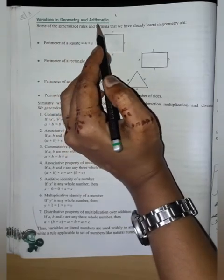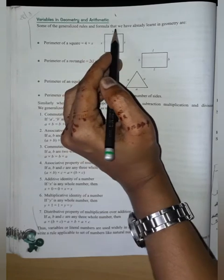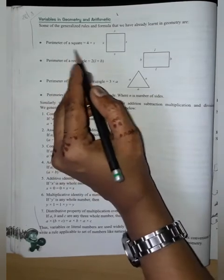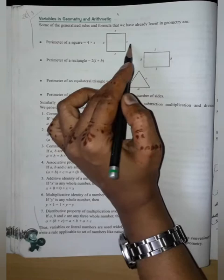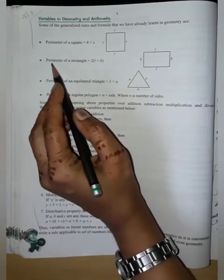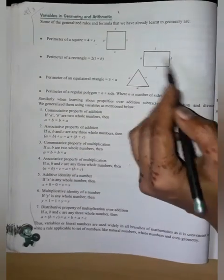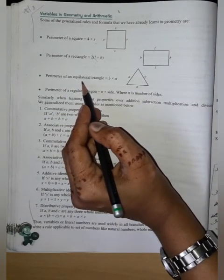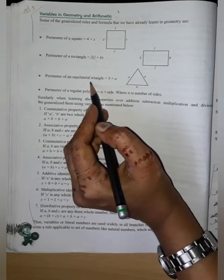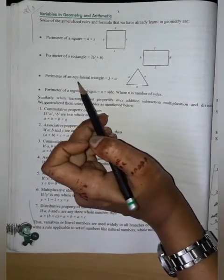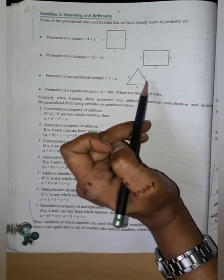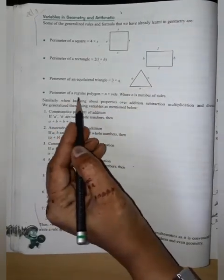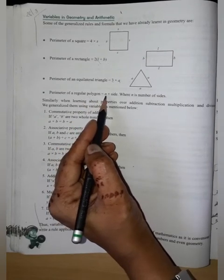Variables in geometry and arithmetic. Some of the generalized rules and formulas that we have already learned in geometry are: first, perimeter of square is four into S, S means side. Perimeter of rectangle is equal to two bracket length plus breadth. Perimeter of an equilateral triangle is equal to three into A. Total triangle is equal to n into sides, when n is number of sides.